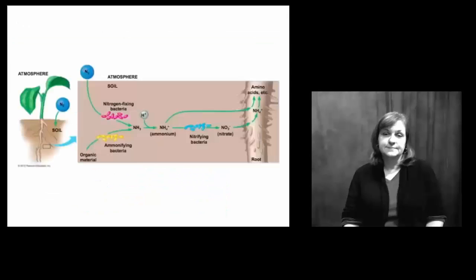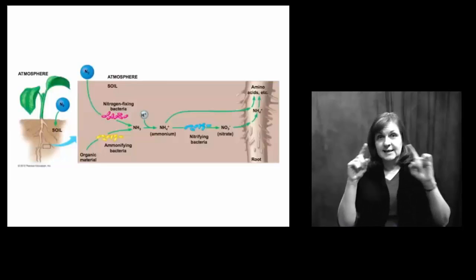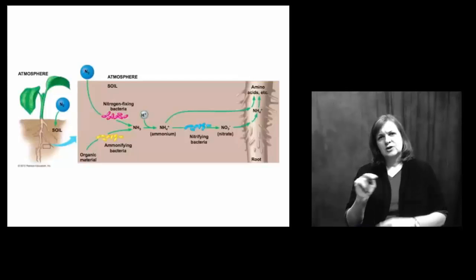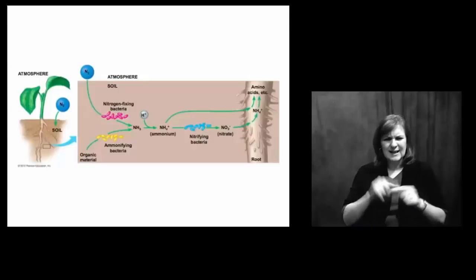When we talk about nitrogen in plants, nitrogen is actually the largest limiting factor in plant growth and success. Nearly every plant on this planet has a nitrogen deficiency, and most also have a phosphorus deficiency. This is often confusing because our atmosphere is full of nitrogen — so why are plants nitrogen deficient?